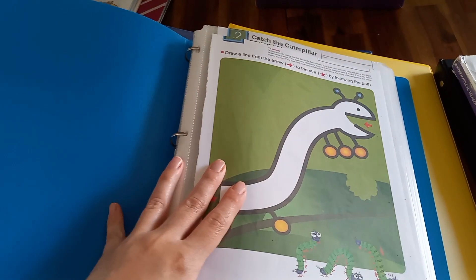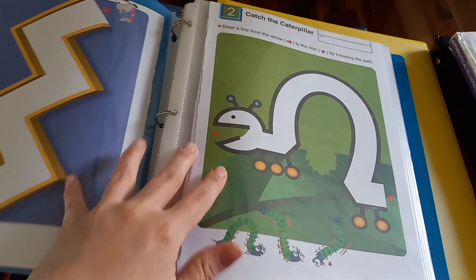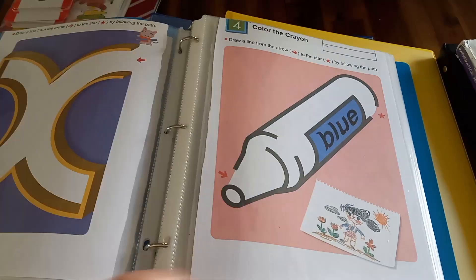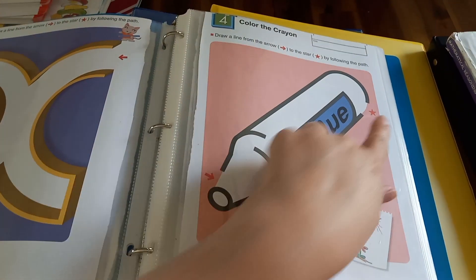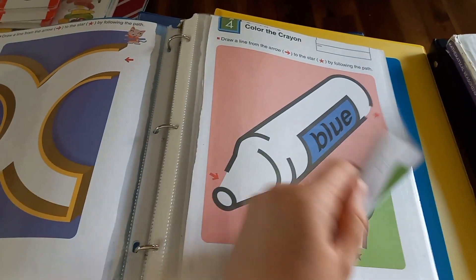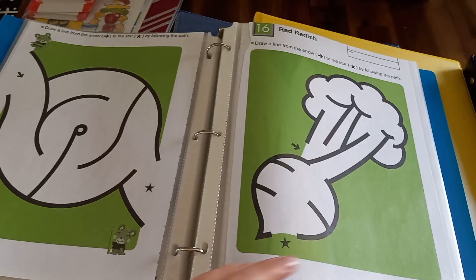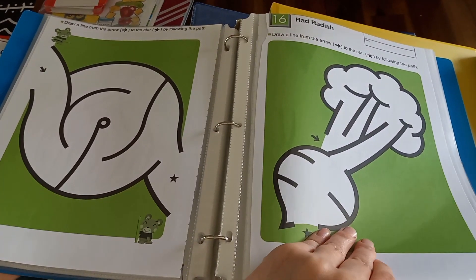This is the book from Kumon and it's just a simple mazes book. The mazes get a little harder as it goes on and they got to go from one end to the other and try to stay in the lines. So I do this to help them learn the pencil control.